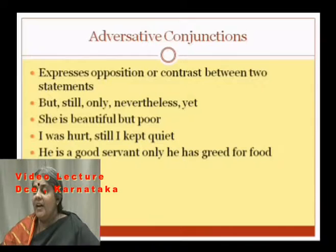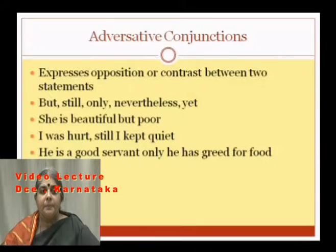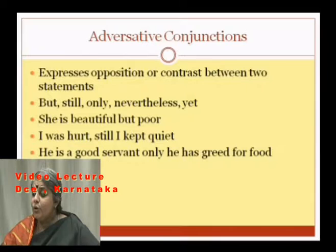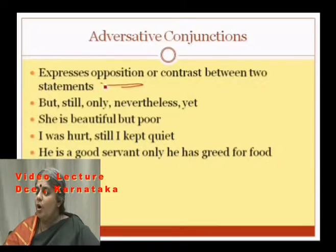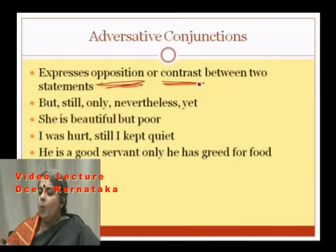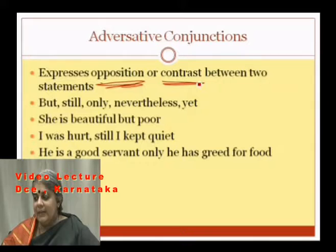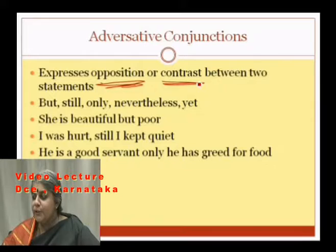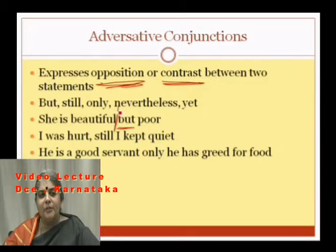An adversative conjunction expresses opposition or contrast between two statements. It gives you opposition or contrast. Conjunctions used here: but, still, only, nevertheless. Example: 'She is beautiful but poor' — she is beautiful; what has happened? She is poor — that is contrast.